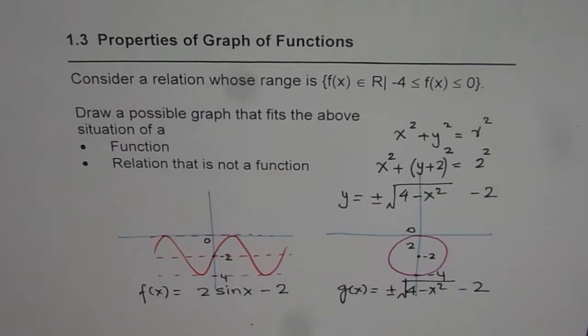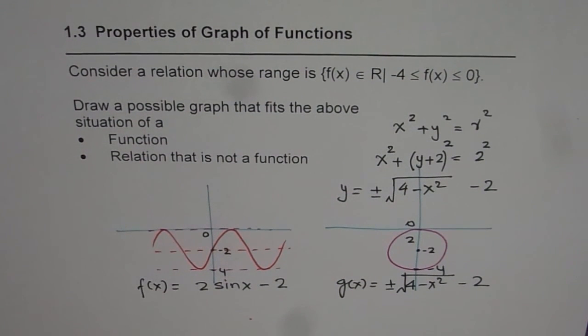So that is the solution for the given equation. So if we have a restricted range, range restricted from both sides, then the function could be a sinusoidal function and circle could be a relation which represents the same situation. I hope you find it interesting and useful. Thank you and all the best.